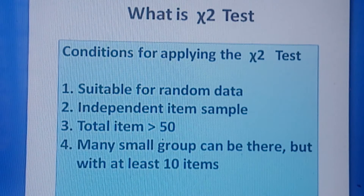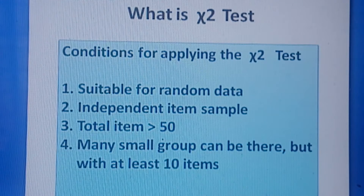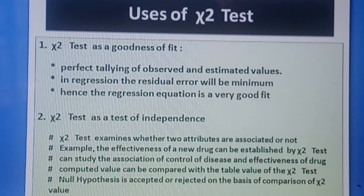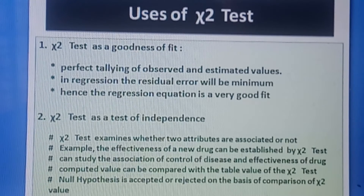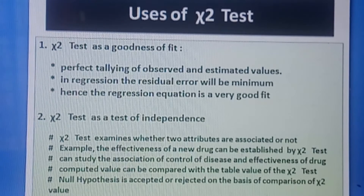Now let us think about the usefulness of the chi-square test. The uses can be summed up as two. The first use is chi-square as a goodness of fit — meaning a perfect tallying of observed and estimated values. In regression, the residual error will be minimum whenever there is a matching between them, meaning the regression equation is a very good fit.